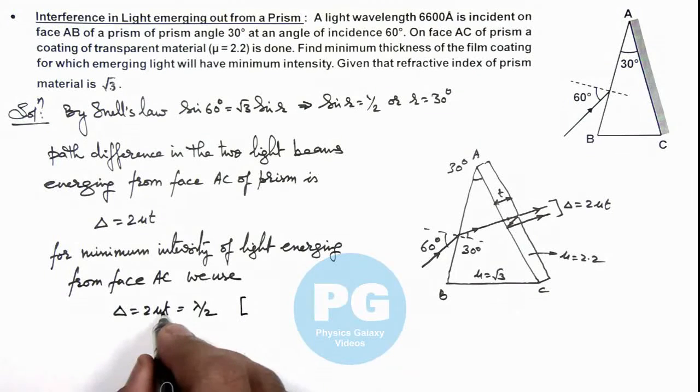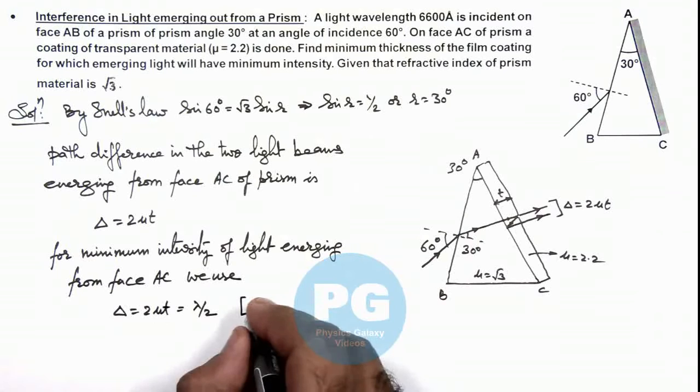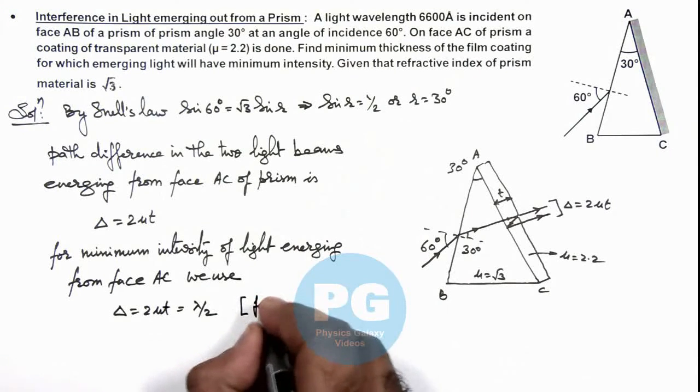For the minimum value of t, the minimum thickness of this film, we can say destructive interference should take place.